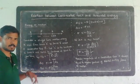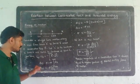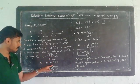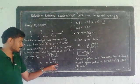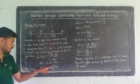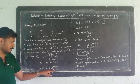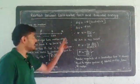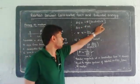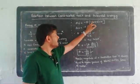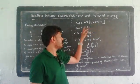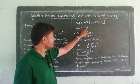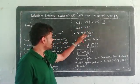The potential energy difference between points A and B, delta U, is equal to: the conservative force is constant and can be taken out. So we get F is equal to minus delta U by delta x.